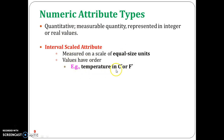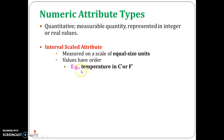For example, consider temperature in Celsius or Fahrenheit. Suppose the temperature of 20 degrees Celsius is 5 degrees higher than the temperature of 15 degrees Celsius. The temperature difference between 15 degrees Celsius and 20 degrees Celsius is 5 degrees Celsius.